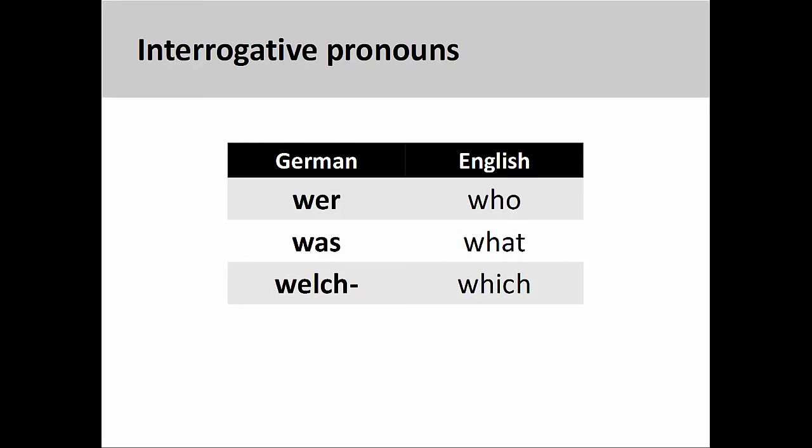There are different types of interrogative words. Interrogative pronouns can be used to ask questions about the identity of a noun. For example, 'wer' (who), 'was' (what), and 'welch' (which) are interrogative pronouns.